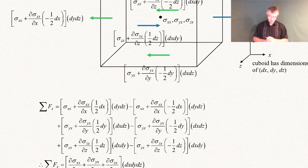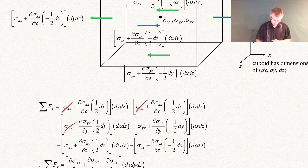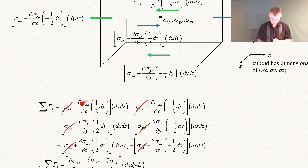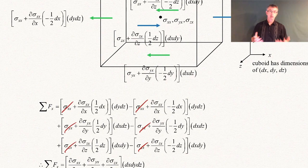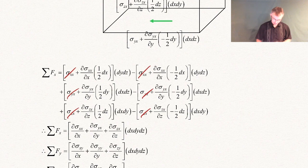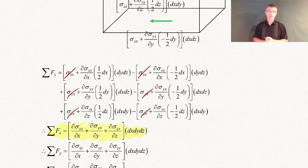Looking at the sum of all forces in the x-direction, you'll see some terms drop out — sigma_xx cancels with the other sigma_xx, and similarly for sigma_yx and sigma_zx. The remaining terms add together: you get (d sigma_xx / dx) times one-half dx·dy·dz, and a matching term with a minus sign that also adds. Simplifying the full expression gives us the surface forces in the x-direction highlighted here.